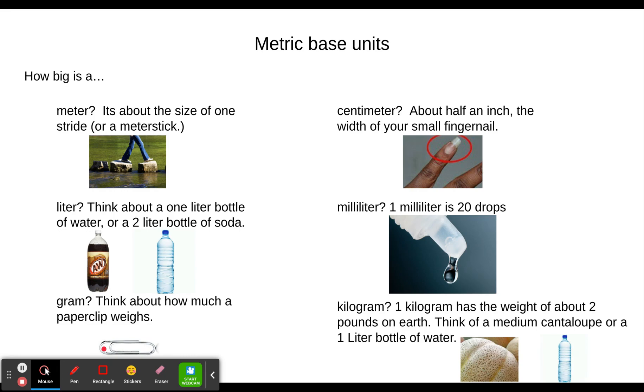If it's a lot bigger, then a kilogram might be reasonable. So a kilogram has a weight of about two pounds on earth. Pounds is actually a force, kilograms is the mass, but I don't want to get into that too much right now. So a kilogram has a weight of about two pounds on earth. Think about a medium-sized cantaloupe. So if you wanted to picture a different kind of fruit, if it's a smaller fruit than a cantaloupe, like a pear or something like that, then it would be less than one kilogram.